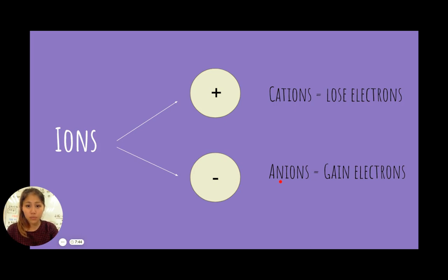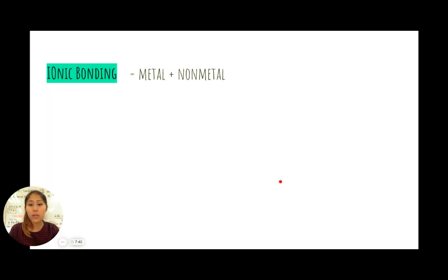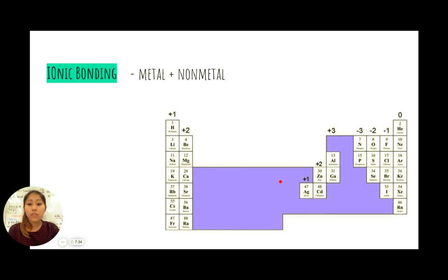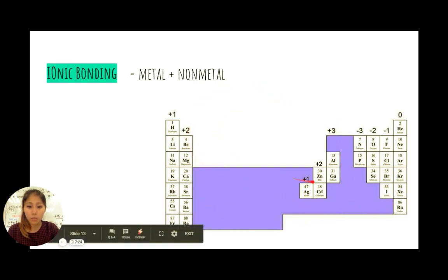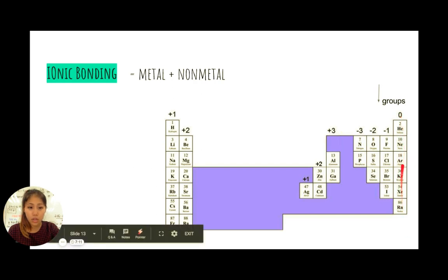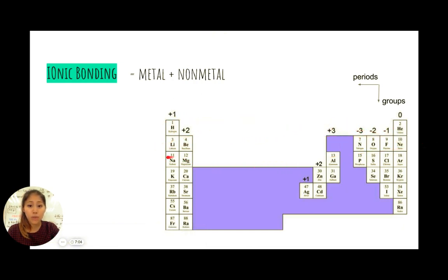Ionic bonds are formed between a metal and a nonmetal. A metal is usually found on the left-hand side of the periodic table — to the left of this staircase here. The left of the staircase includes all metals, including the transition metal section. Anything to the right of the staircase is predominantly nonmetals. We have groups, which are columns going down, and periods, which are rows going across. Period 3 means row 3; group 8 means column 8.